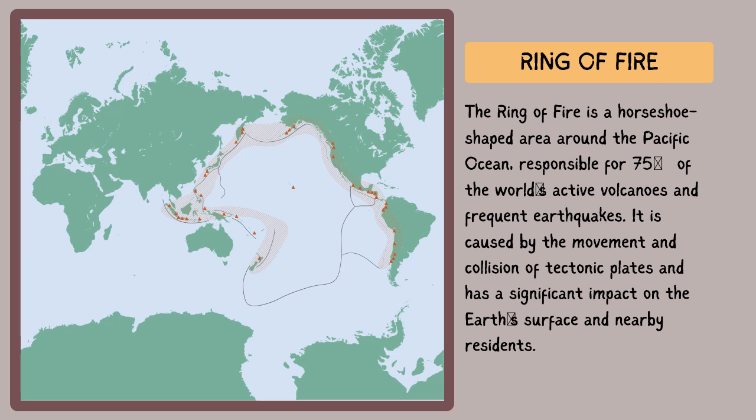What you're seeing here is the Ring of Fire, which is a horseshoe-shaped zone around the edges of the Pacific Ocean basin. This region is known for its high volcanic and seismic activity due to the presence of several tectonic plate boundaries. The Ring of Fire is home to about 75% of the world's active and dormant volcanoes, as well as frequent earthquakes.